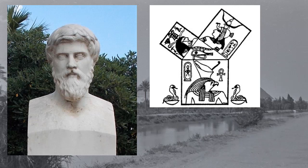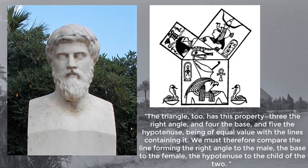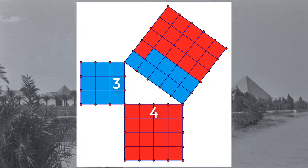He writes in section 48 and 49 of On Isis and Osiris: The triangle has this property - 3 the right angle, and 4 the base, and 5 the hypotenuse, being of equal value with the lines containing it. We must therefore compare the line forming the right angle to the male, the base to the female, and the hypotenuse to the child of the two. 3, 4, and 5 are the only set of consecutive whole numbers to satisfy the Pythagorean formula. Although it may be hard for us to understand, geometry was very much considered a form of nature.